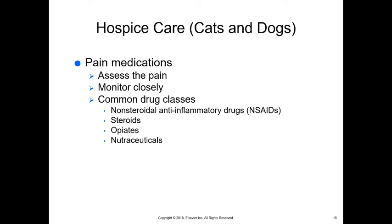Opiates are commonly used for pain relief and are effective, but we need to be careful when using them. Nutraceuticals — nutritional nutrients available for pets — can also make them feel better. Glucosamine and chondroitin sulfate are commonly used for osteoarthritis. Omega-3 fatty acids are often used for neurologic disease, skin disease, and osteoarthritis as well.